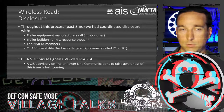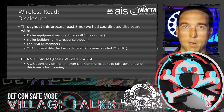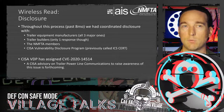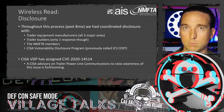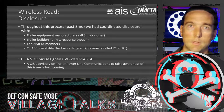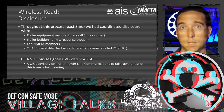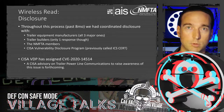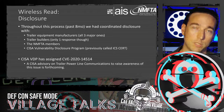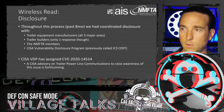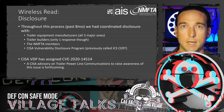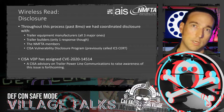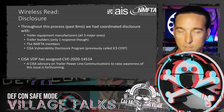This issue has been disclosed to various parties over the past eight months. We've been in contact with all three major trailer equipment manufacturers and reached out to trailer builders — only one responded. We coordinated disclosure with NMFTA members and sponsors, and with what was previously ICS-CERT, now the CISA Vulnerability Disclosure Program, who also reached out to non-responsive trailer builders. CISA VDP has assigned CVE-2020-14514, with an advisory on trailer power line communications forthcoming.